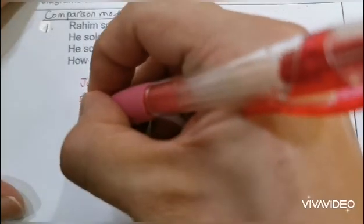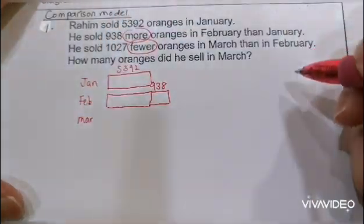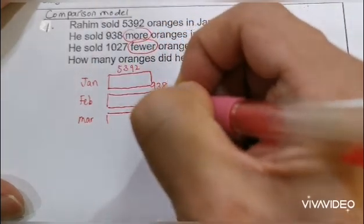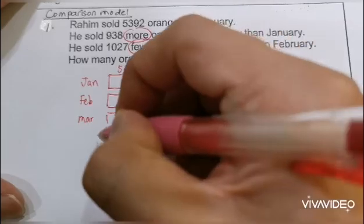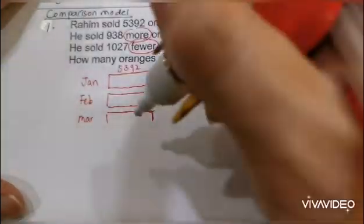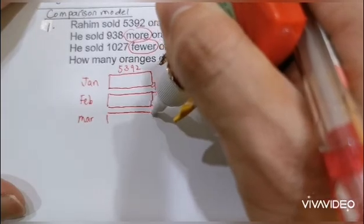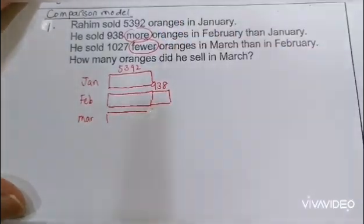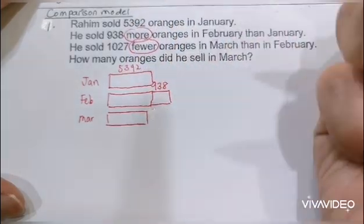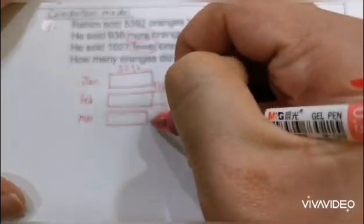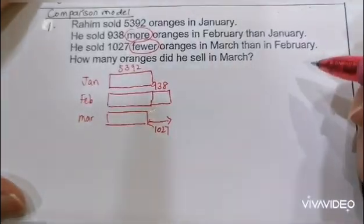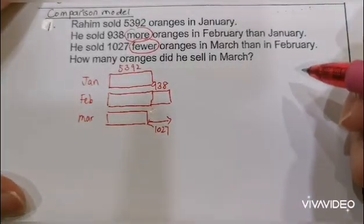He sold 1,027 fewer oranges in March than in February, so 'fewer' means March is going to be a little shorter than February. You can draw it something like this — even shorter — and they say 1,027 fewer.